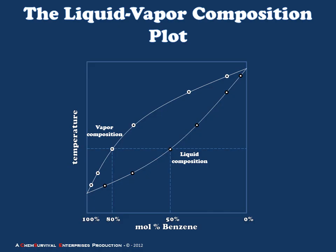Now that we have this plot, instead of using the Raoult's Law calculation, we can simply go to the plot, select the composition we're starting with, and determine the composition of the distillate when a simple distillation is performed. In our next installment, we'll discuss what to do when we want a 100% pure sample rather than something that is, in our example, only 80% pure.